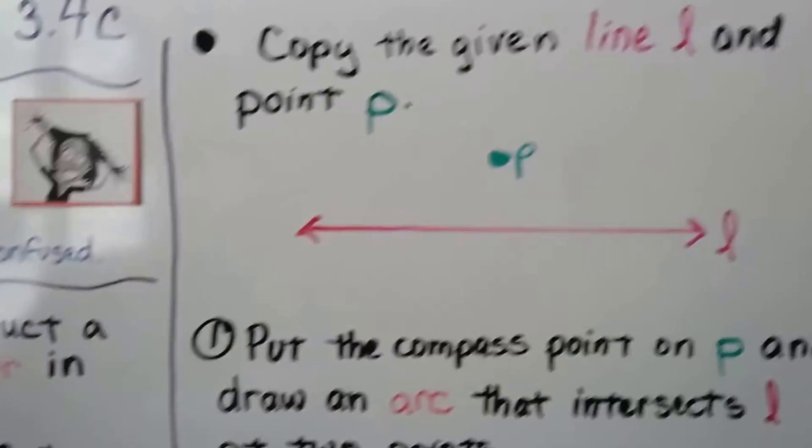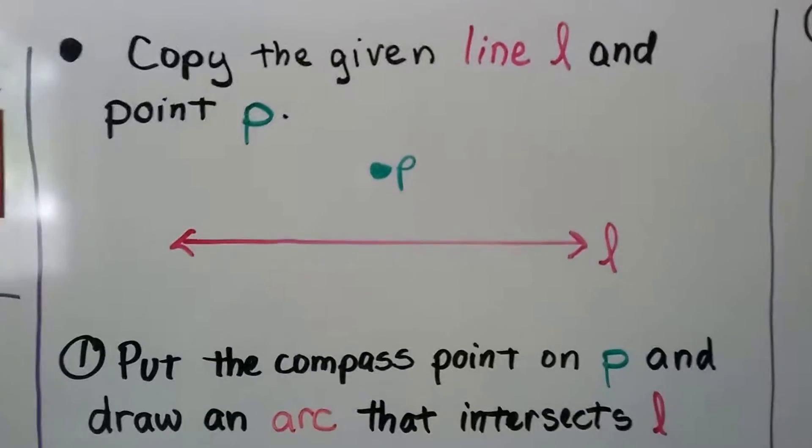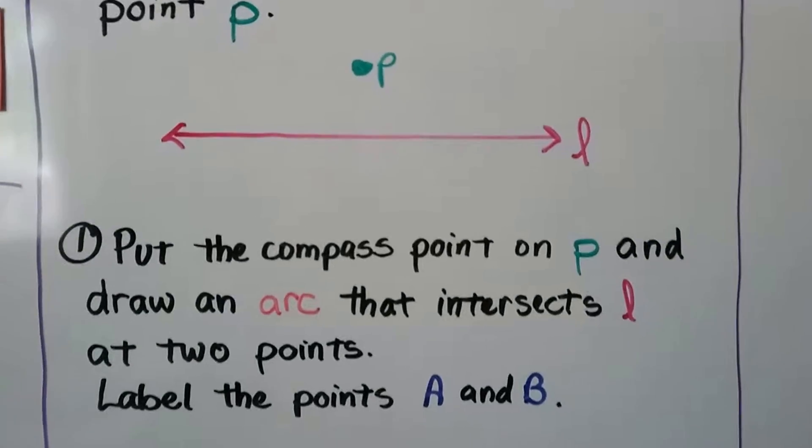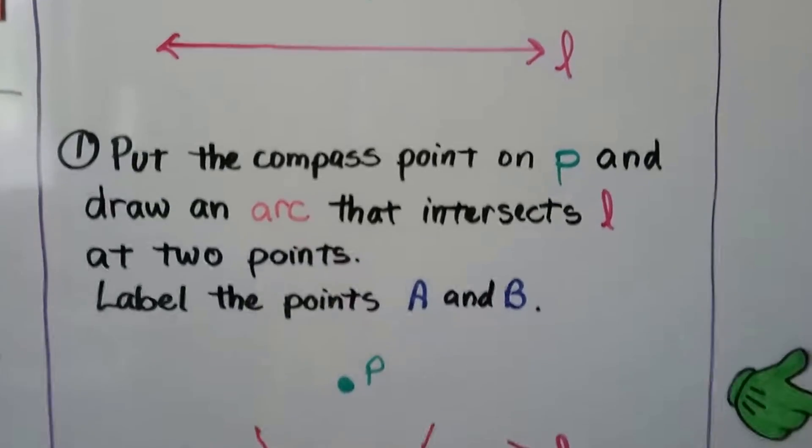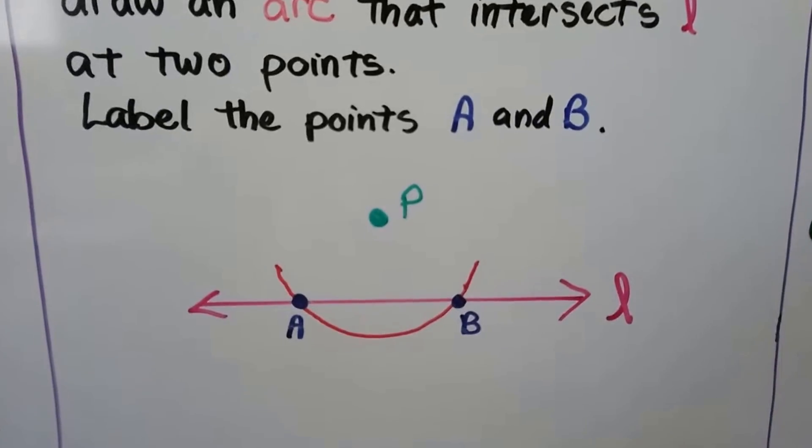So what we do is copy the given line L and point P. We put the compass point on P and draw an arc that intersects L at two points and label the points A and B.